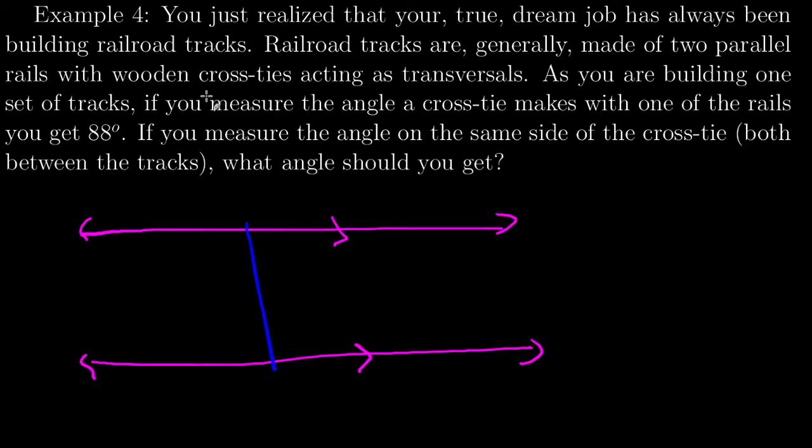Okay. So, you measure the angle that one of the cross ties makes with one of the rails and get 88 degrees. You want to measure the angle on the same side. So, this angle I measured to the left of the transversal. So, I'm going to measure another one to the left. And both between the tracks, which means we have a same side interior angle pair.